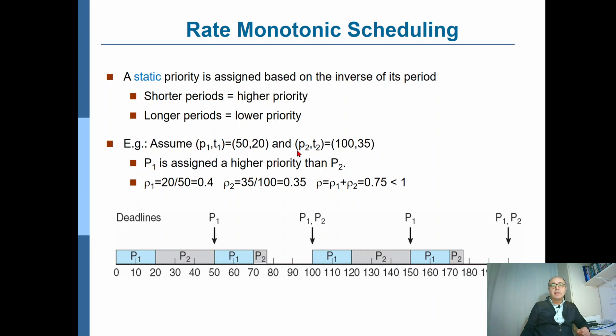And similarly, for the process 2, the period and the time to execute are given as 100 and 35 respectively.